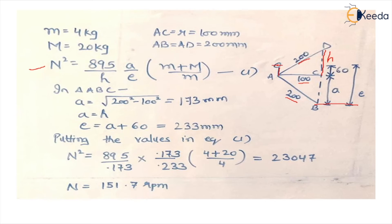You place all the values in the equation. You get the answer 23047. You take the square root of this value and you get the value of the speed which is 151.7 RPM. Thank you.